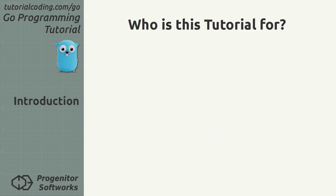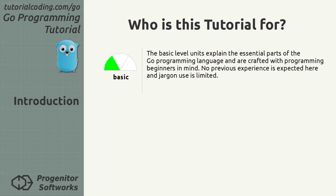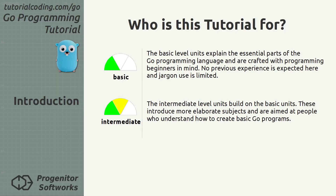Who is this tutorial for? The tutorial is released one unit at a time, starting with the basic units which introduce the basic syntax, concepts, and tooling. These are aimed at newcomers to the Go programming language. Background knowledge in other programming languages won't hurt, but it's also suitable for absolute beginners. The intermediate level units build on the base units and explore more progressive subjects like the standard library. People with a basic understanding of Go might want to start here.